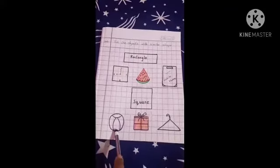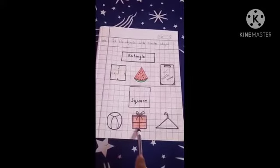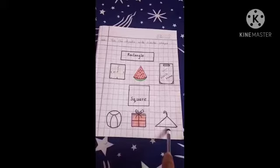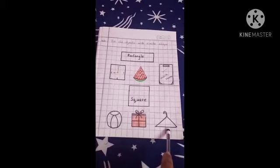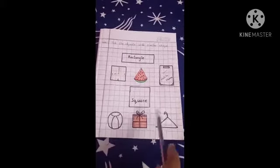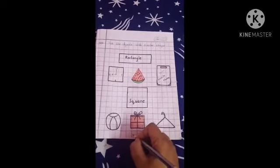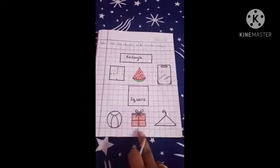Now identify ball. This is circle in shape. This is gift box. This is square in shape. This is hanger. This is triangle in shape. So we have to put a tick on gift box. This is square in shape.